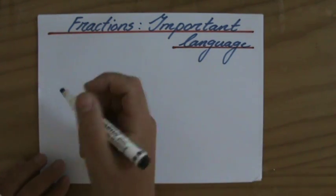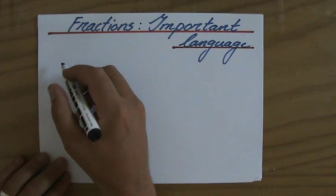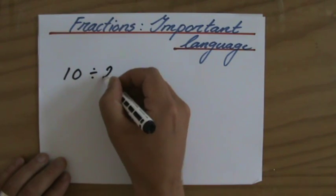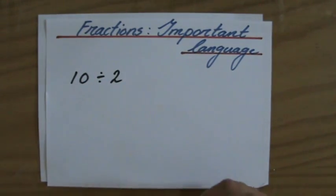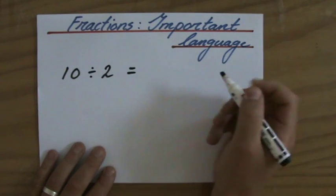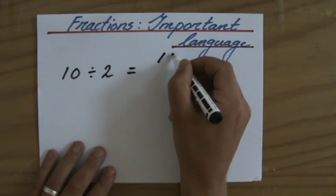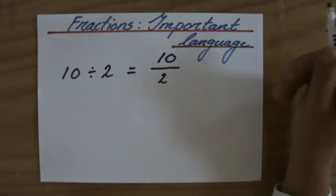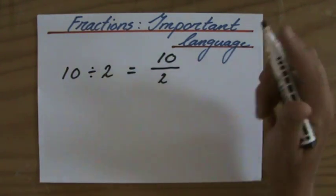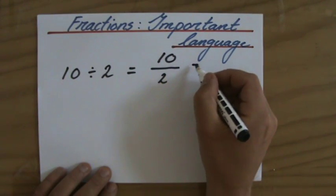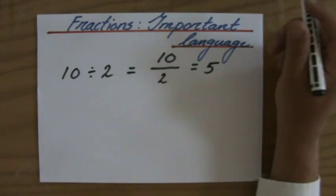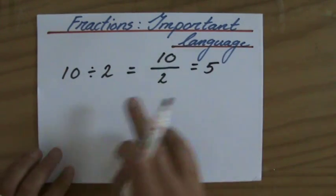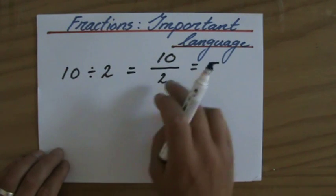I just want to show you, like in the past perhaps in primary, you would say 10 divided by 2 and write down a division like this. Now a fraction, boys and girls, is exactly the same, only a different notation. We now say 10 divided by 2 or 10 over 2. A fraction is a division, and 10 over 2 is 5. That is a fraction. Is that something to be scared of? No, absolutely not, because you've been doing that for years correctly already.